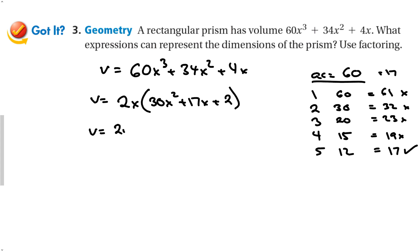Our technique is to separate the 17x into 5x plus 12x plus 2. Now I'm going to find the common factor between the first two terms and that is a 5x which leaves me with 6x plus 1. And then the common factor between the next two is 2 which leaves me with 6x plus 1.